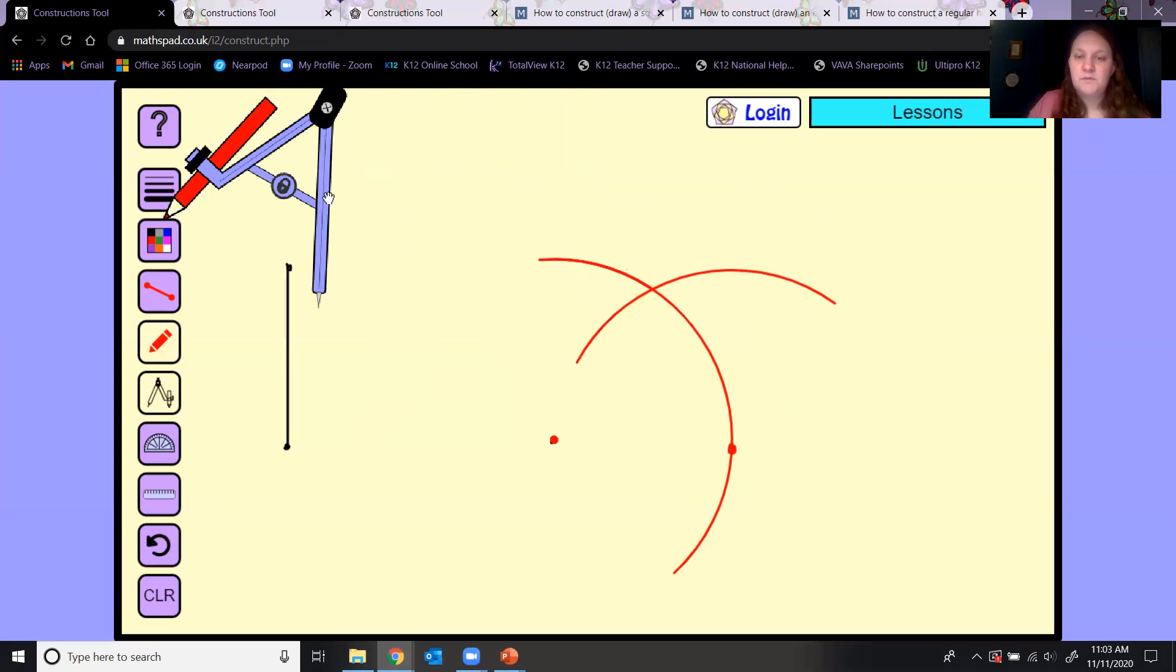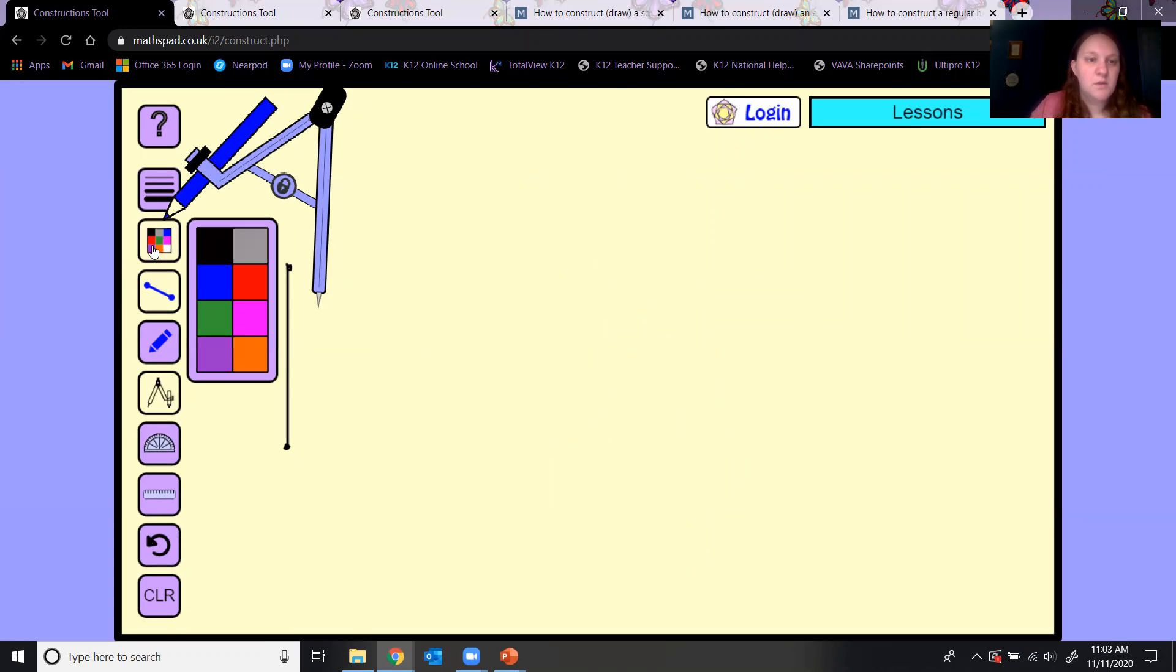What we've done is created three points that are all equidistant from each other. Remember equidistant means same distance apart from each other. So I can connect those three points with a line. It's definitely having a glitch. Let me do this one more time.